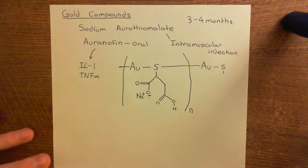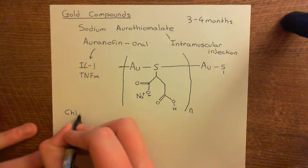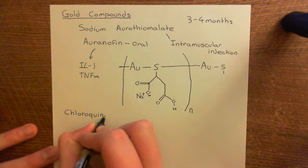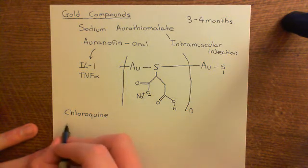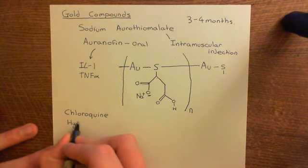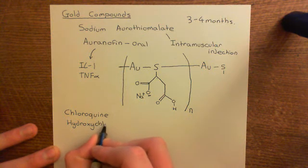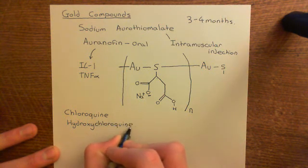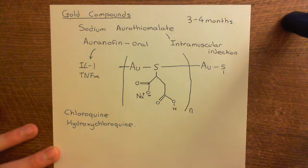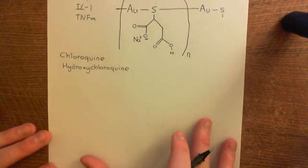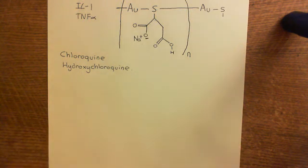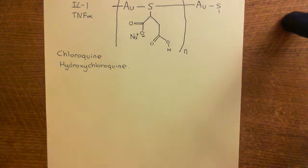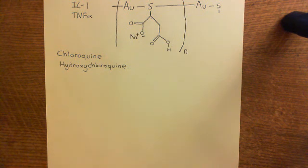The final category of DMARDs is the anti-malarial drugs — chloroquine and its related compound hydroxychloroquine. These drugs are usually used to treat malaria and are not particularly nice drugs; they have quite a few horrible side effects. Their mechanism of action in rheumatoid arthritis is not known, but both chloroquine and hydroxychloroquine are effective in its treatment. That now concludes our discussion of anti-rheumatoid drugs.